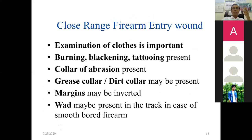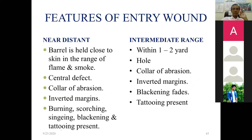Near distance: barrel is held close to the skin — flame or smoke with central defect is present, collar of abrasion present, inverted margins present, burning, scorching, singeing, blackening, and tattooing all present. Intermediate range (within 1 to 2 yards): central hole present, collar abrasion, inverted margins present, blackening fades as distance increases. Blackening is present only up to one year. Tattooing is also absent after two years.